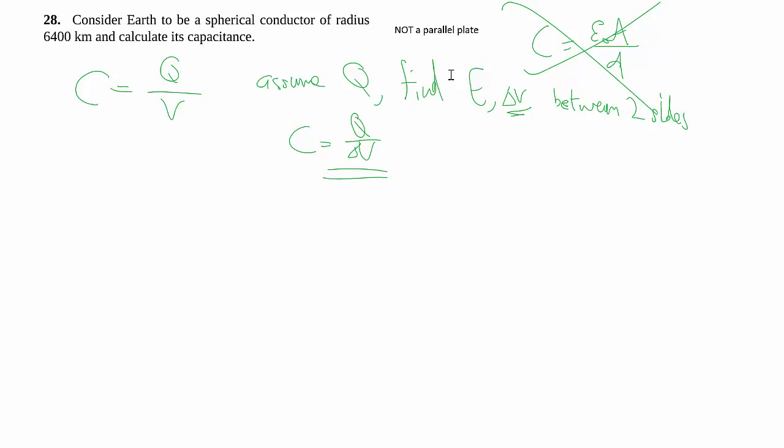And then once you have delta V, we go C equals Q over delta V. And then we can call it a day. The Q will cancel out. Everything is going to be fine. So let's apply that to this particular case. It looks a little tricky because we just have a simple single conductor that's a sphere.